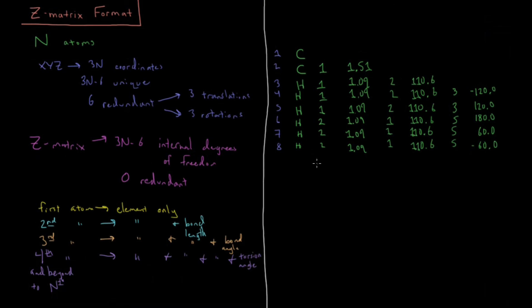As I mentioned, all the redundant coordinates are missing here. We have eight atoms, and we have seven bond lengths, six bond angles, and five torsion angles for a total of 18. Three N here is 24. Three N minus six is 18. So that agrees with that formula there.